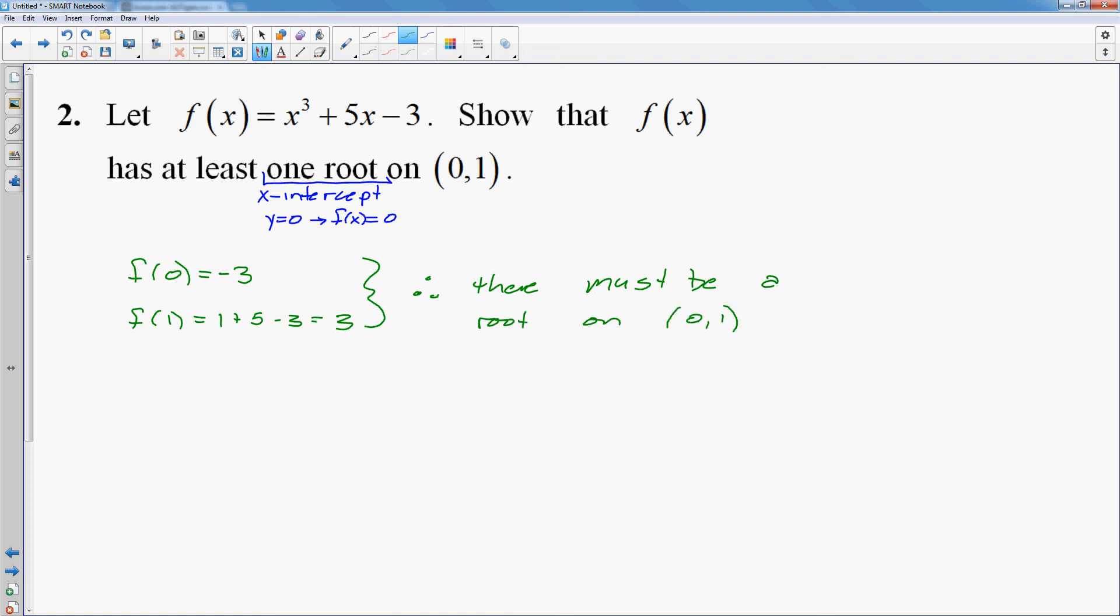And you do need to pay attention to context, because a lot of people will see 0, 1 and think it's an ordered pair, but it's preceded by the word on. This is an interval. Now if it said at 0, 1, now we're talking about the ordered pair 0, 1. But if we're on 0, 1, then that's an interval from x equals 0 to x equals 1. So pay attention to the context when you see things that look like ordered pairs.